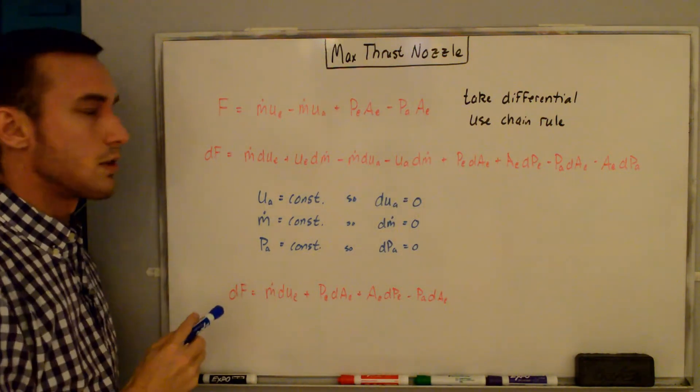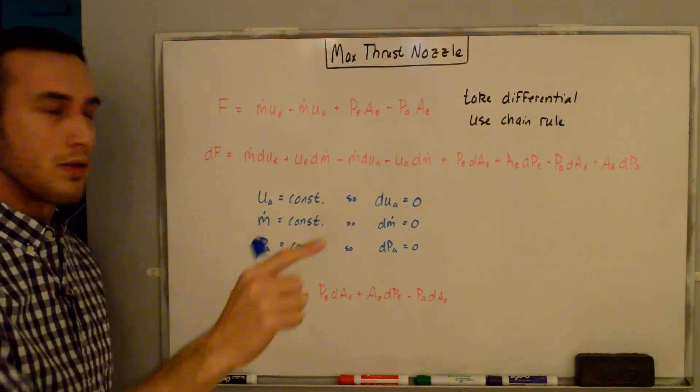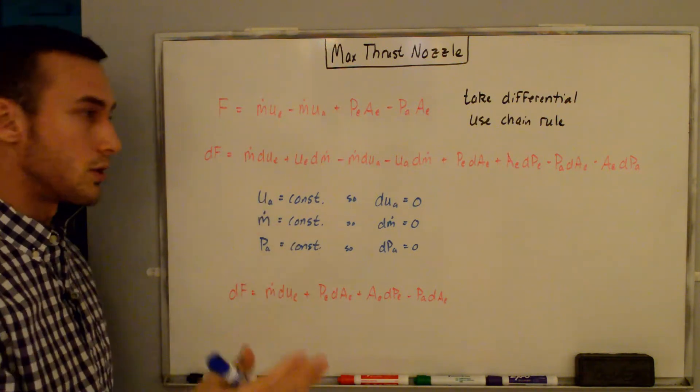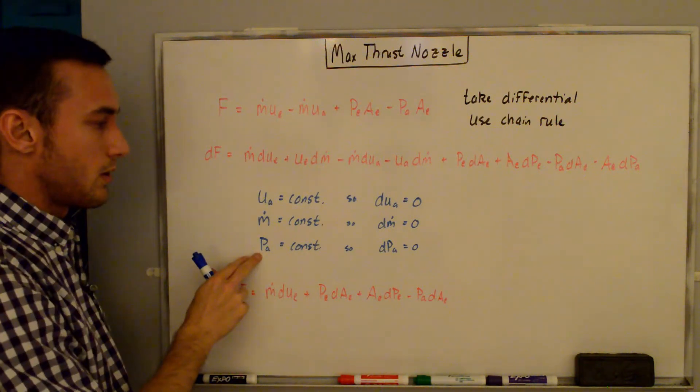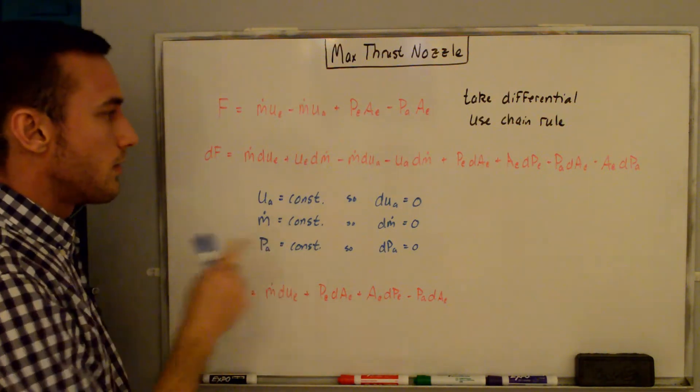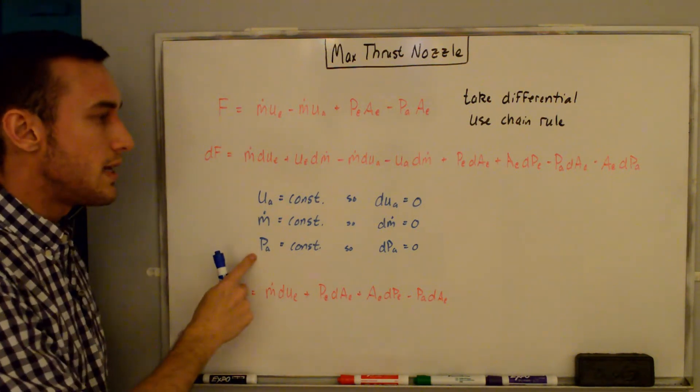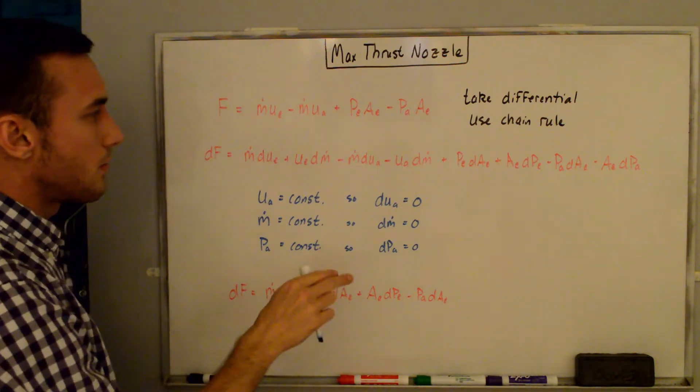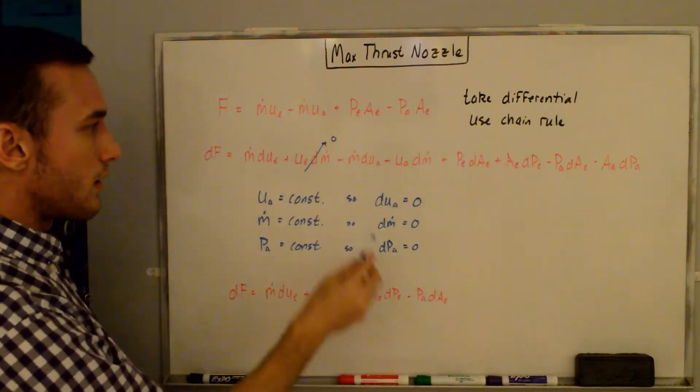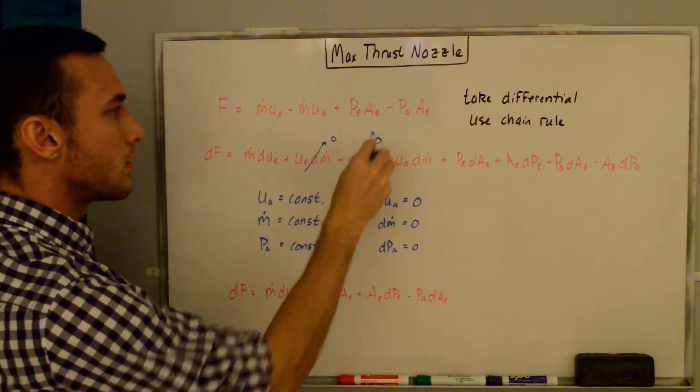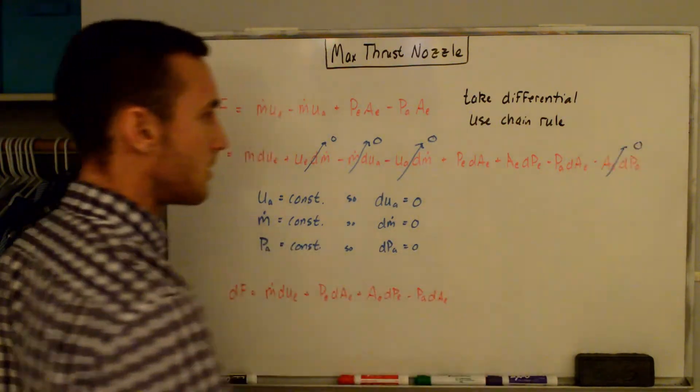And so some things to note here are that uA is equal to a constant. That means that the flight speed is assumed equal to a constant, or the air entering the engine for a rocket. We don't even have uA, so we can just assume it's a constant here. ṁ is equal to a constant, so the mass flow rate is constant through the engine. The atmospheric pressure is also equal to a constant. And so the derivative of a constant is equal to zero, so we can say that duA = 0, dṁ = 0, and dpA = 0. And that means that we can cross out some of these terms. So crossing out, we have the dṁ term in here, that goes to zero. We have duA here, so that goes to zero. We have dṁ here, that goes to zero. And then we have dpA over here, so that goes to zero as well.